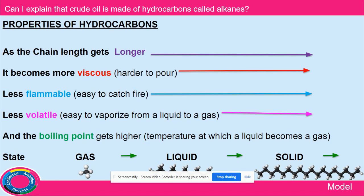It's less easy to catch fire. If you set fire with a match to the gas that comes out of the gas tank, it's easy. If you try setting fire to the tire on the road, you can do it, but you need a flame thrower. How volatile is it — how easily will it vaporise from a liquid to a gas? Well, if it's a gas already, it's going to be nice and easy. But if it's a solid substance like tar, you've got to put an awful lot of heat into it before you can get it to vaporise.